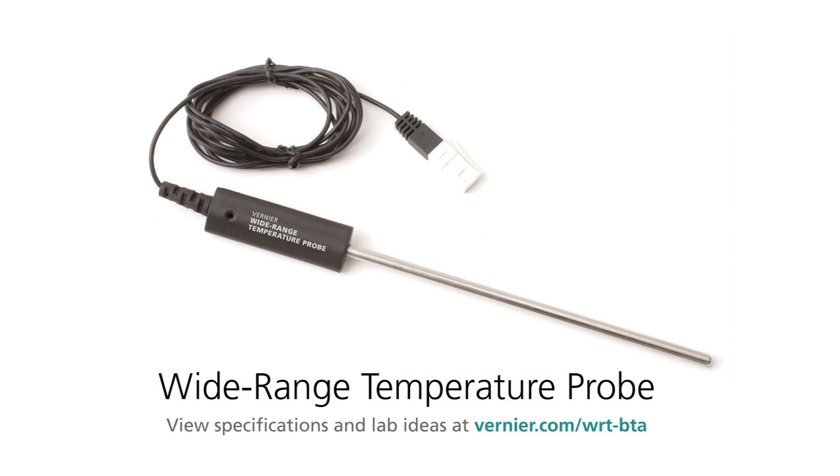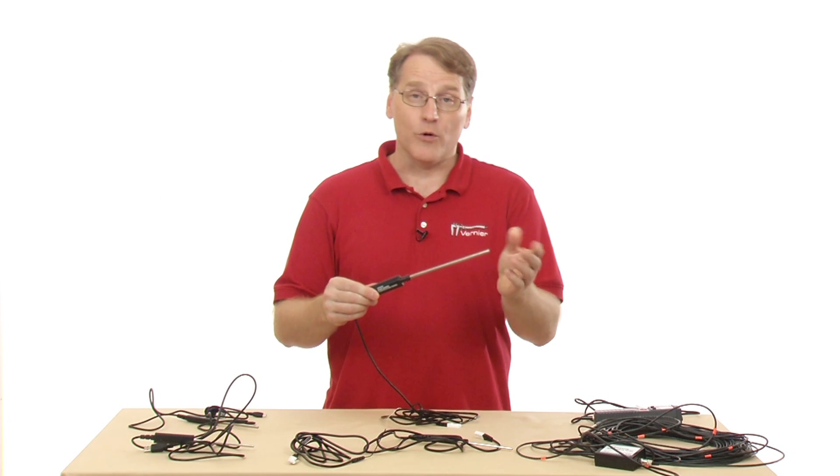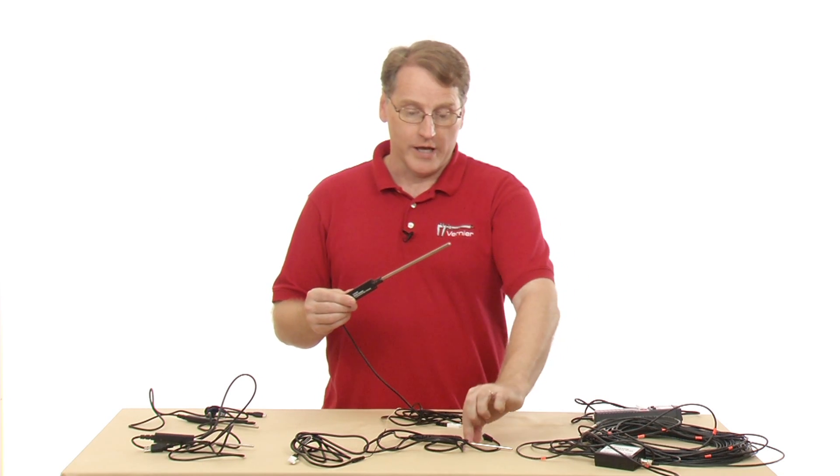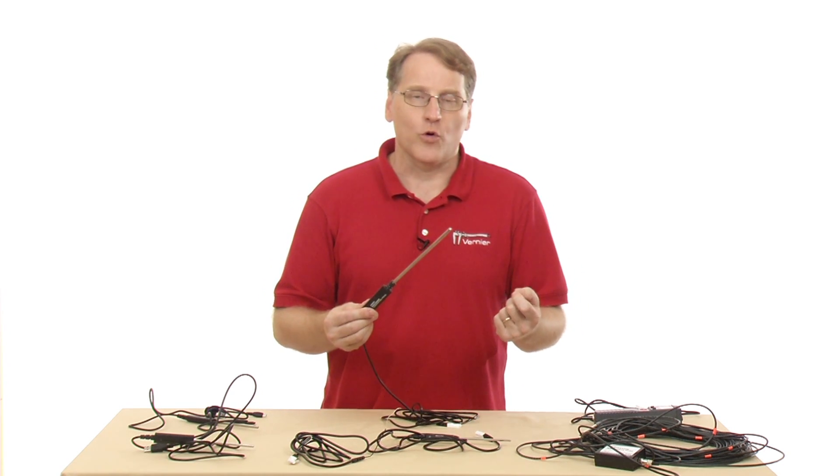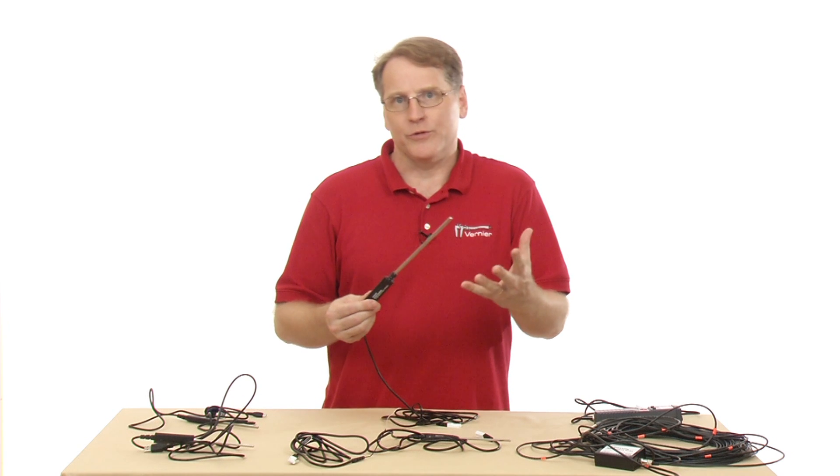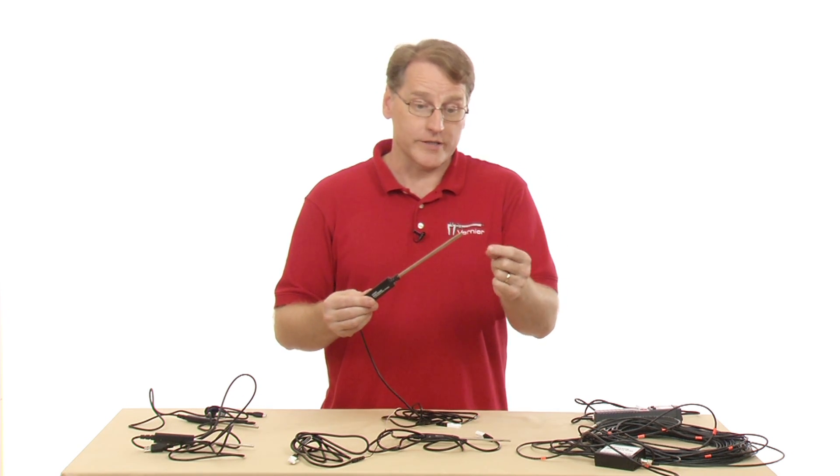Next is the wide range temperature probe, and the key feature with this one is the fact that it can go to a higher temperature than our stainless steel temperature probe. So the idea is that you might be using this in an organic lab, and you need to go up to temperatures as high as 330 degrees Celsius.